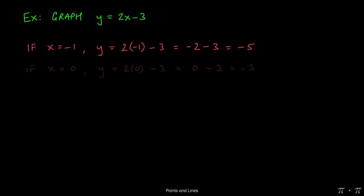We can do the same thing for another x value, say 0. The procedure is identical. We take the original equation, y equals 2x minus 3, and instead of the x we replace it with 0. Two times 0 is just 0, 0 minus 3 gives us negative 3.